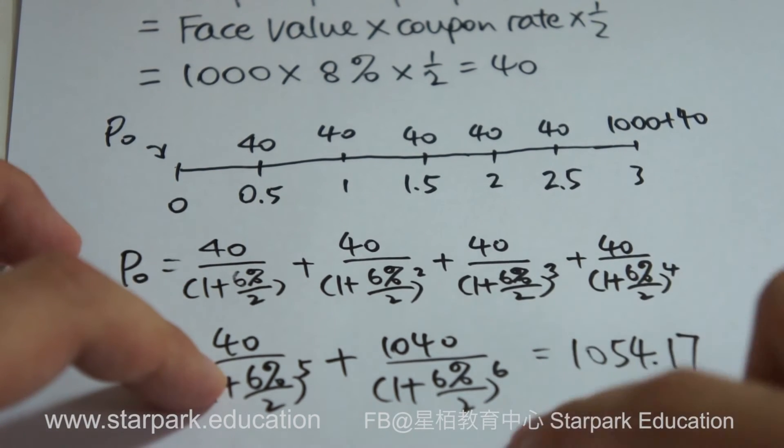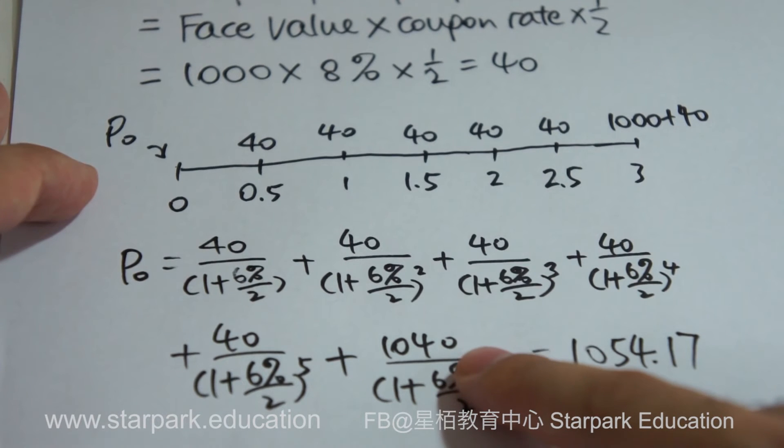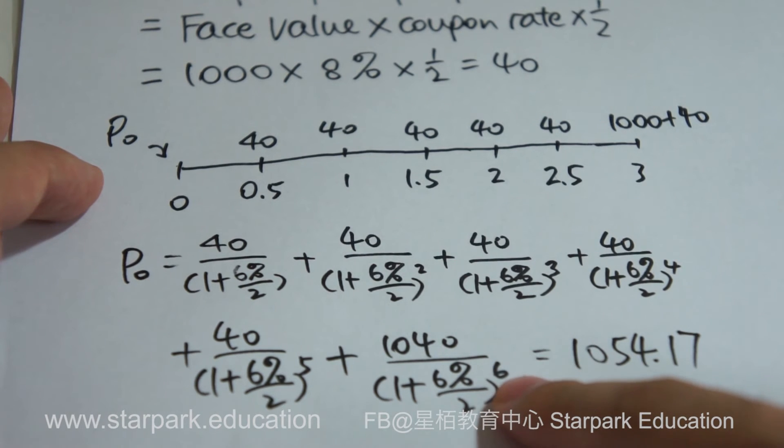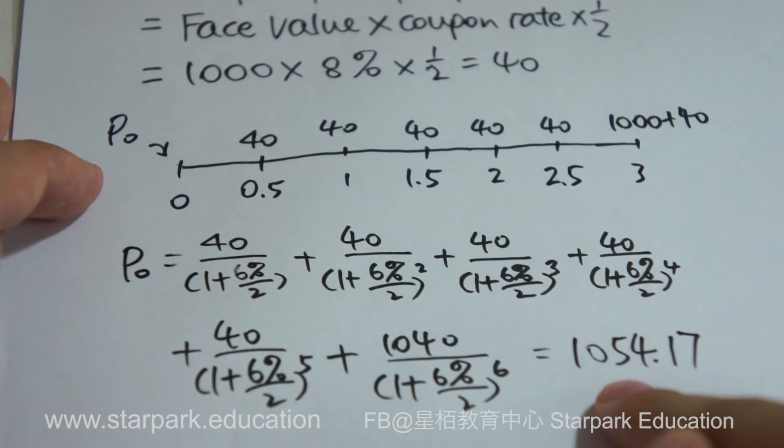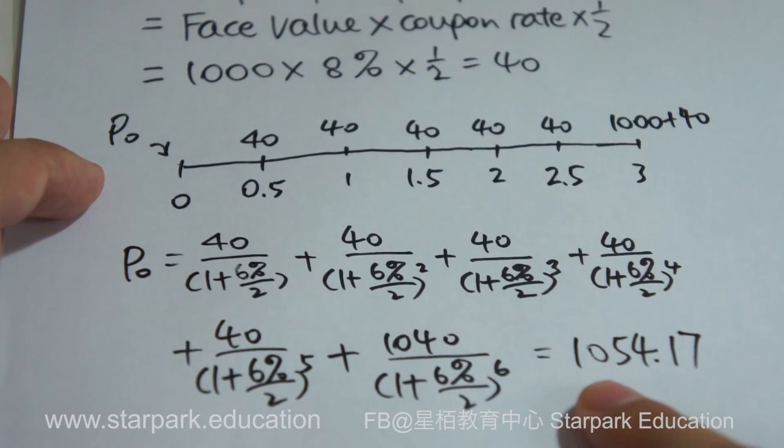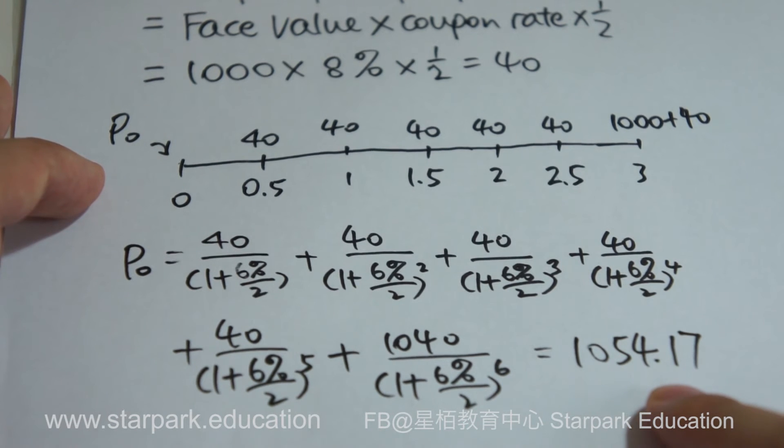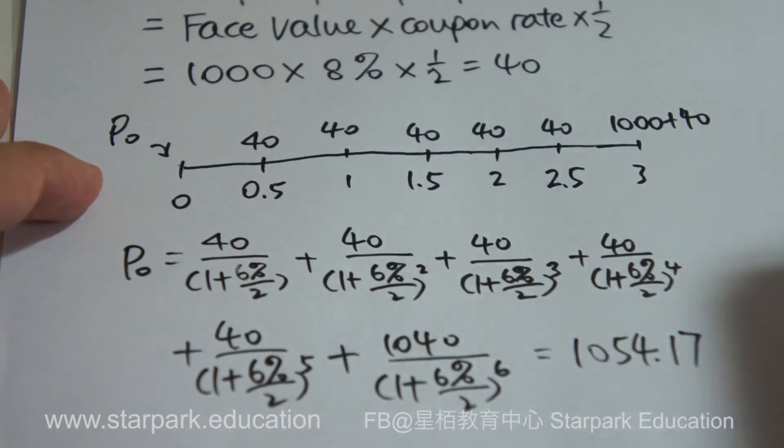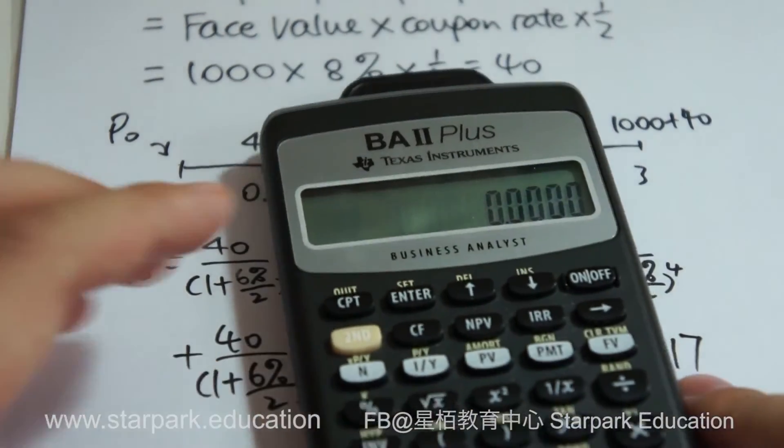We continue the third receipt of the coupon, fourth receipt, fifth receipt, and the last one should be 1040. We need to divide it by 1 plus 6% over 2, now to the power of 6, because this is the sixth time we received the coupon. According to here, you will calculate by using simple calculators, 1054.17. But how can we use the financial calculators for the calculations? Let me explain and elaborate.